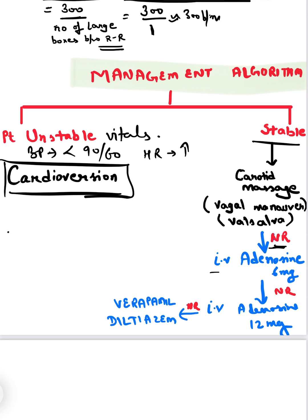If there is no response to carotid massage, we will give IV adenosine 6 mg. If there is still no response, we increase the dose to 12 mg. If there is further no response, we will give verapamil and diltiazem.